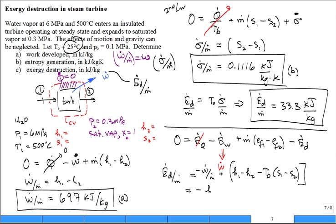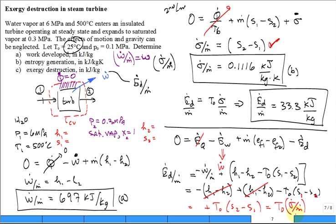So you have h1 minus h2 plus h1 minus h2 minus T naught times s1 minus s2. Guess what cancels? The enthalpy terms cancel, and you're left with T naught times s2 minus s1, switching the order to get rid of the minus sign. From the second law, that's just T naught times sigma dot over m dot. Basically, you're showing that things are consistent.